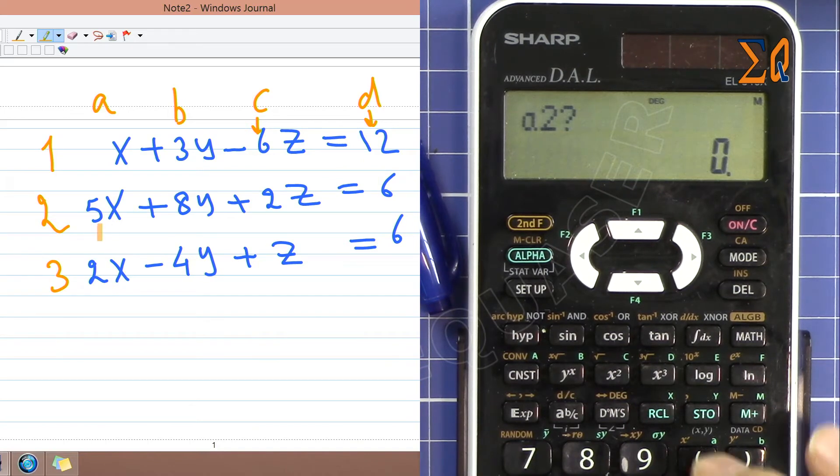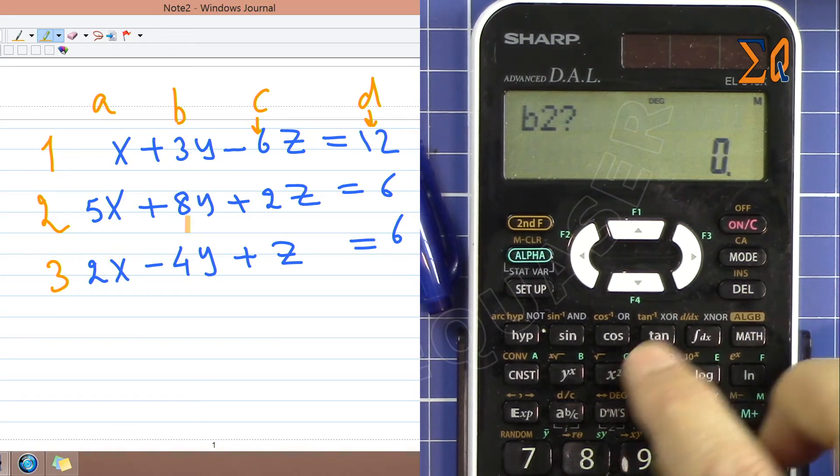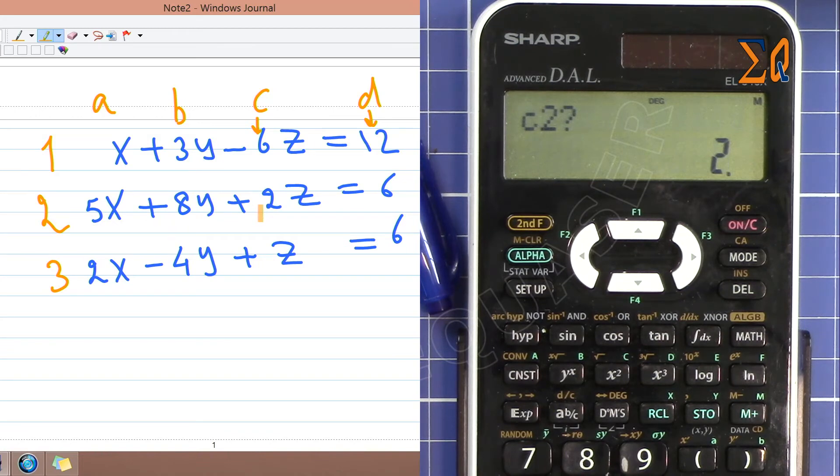Now a2 is 5, b2 is 8, c2 is 2, and d2 is 2. And the values for equation number 3: a3 is 2, b3 is minus 4, c3 is 1, and d3 is 6.